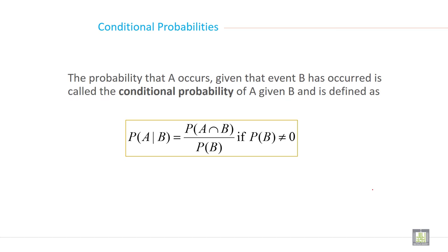The probability that A occurs given that event B has occurred is called the conditional probability of A given B and is defined as P(A|B) equals P(A intersection B) divided by P(B), if P(B) is not equal to zero.